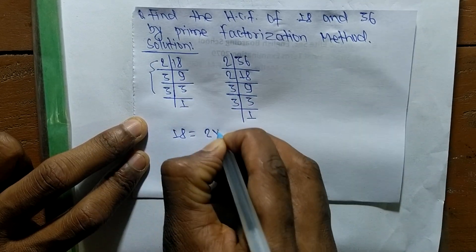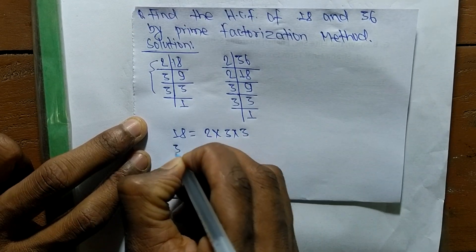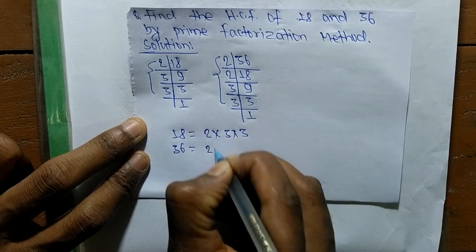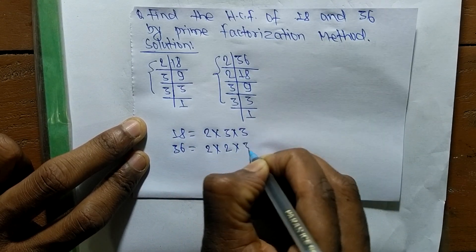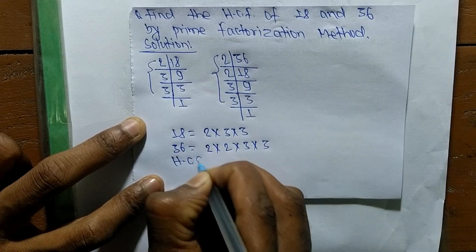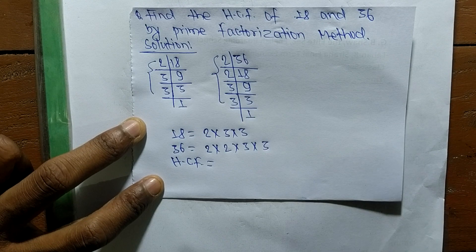From this part it becomes 2 times 3 times 3. Likewise, 36 is equal to 2 times 2 times 3 times 3. So the HCF is equal to... now we have to find out the common factors in the prime factors of 18 and 36.